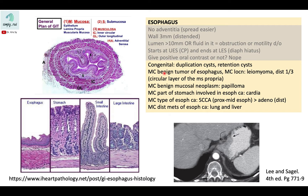The most common benign tumor of the esophagus is the leiomyoma, found in the inner circular layer of the muscle layer. This circular layer is the region where leiomyomas arise, more commonly in the distal esophagus. The most common benign mucosal neoplasm is the papilloma. The most common part of the stomach involved in esophageal carcinoma would be the cardia.